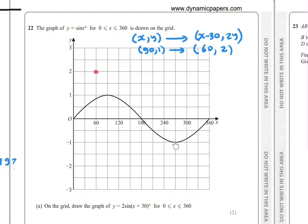And for this point, which is 270 and negative 1, 270 and negative 1 will be 240 and negative 2. So 240 and negative 2.